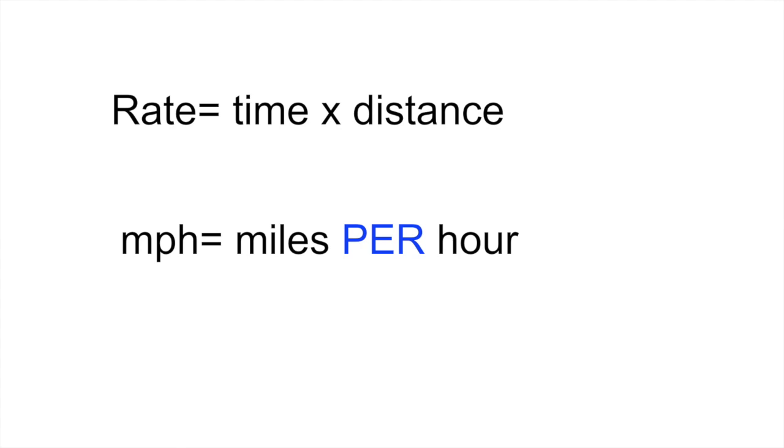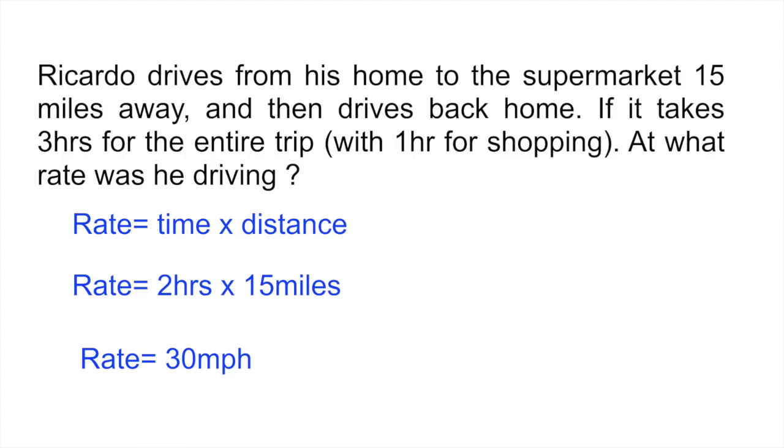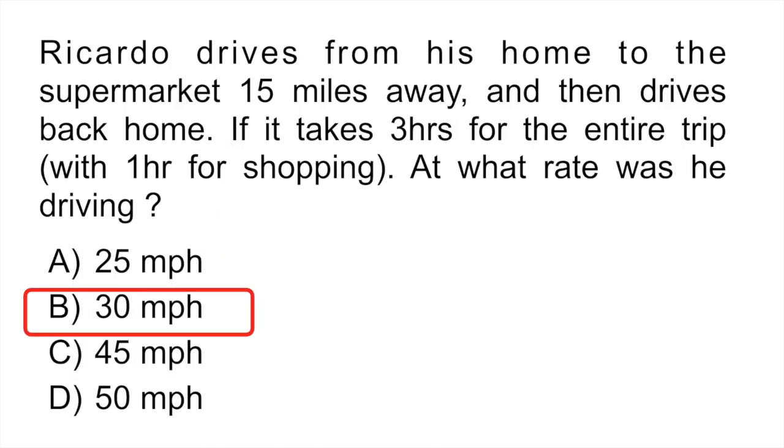Rate is equal to time multiplied by distance. So if we go back to our problem and we say rate is equal to time multiplied by distance, we know that the trip took three hours, but only two of those hours were spent driving. So that would be our time, two hours. And the distance was fifteen miles. So you would simply multiply those two numbers, giving you thirty miles per hour, which is answer B.